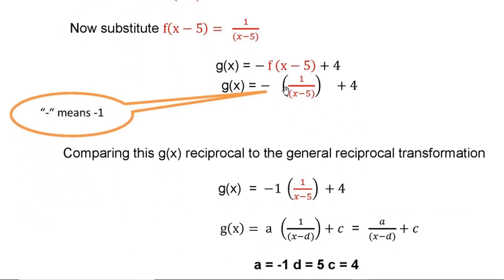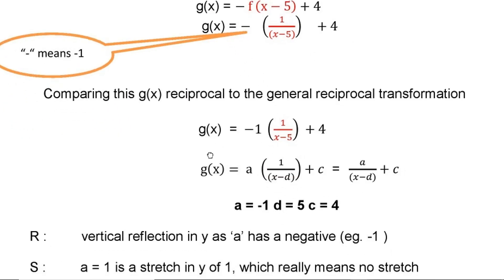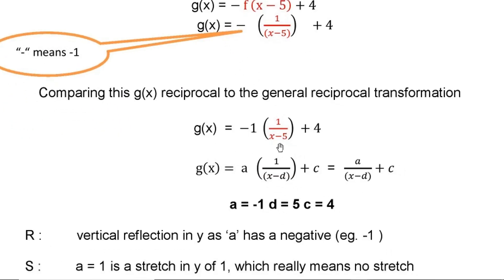So this minus just means -1. So we have to put -1 here. Now let us compare this g(x) reciprocal to the general reciprocal function. This is -1 · 1/(x-5) + 4. Let us equate or relate it with g(x) = a · 1/(x-d) + c.